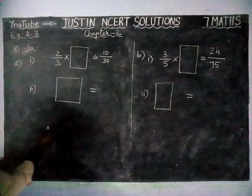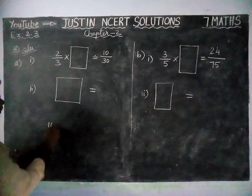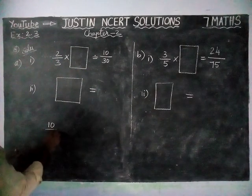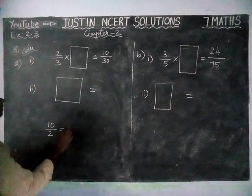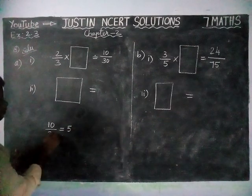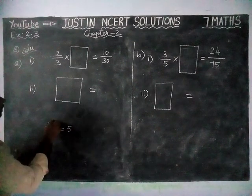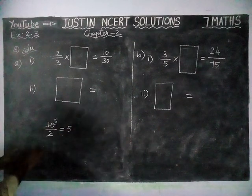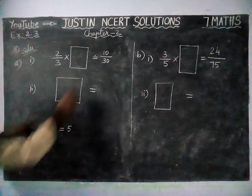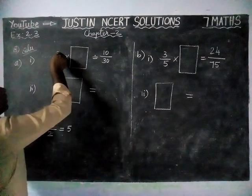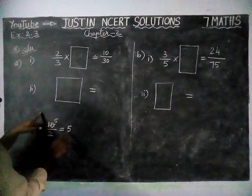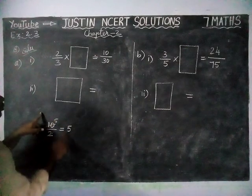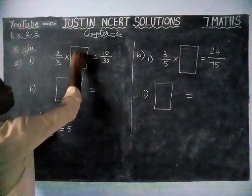So now, 10 divided by 2 is equal to 5. 2's are 10. So, when we are dividing 10 by 2, we are getting 5. So, numerator is 5.